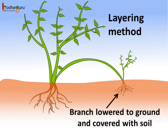In grape and jasmine plants, a young branch is lowered to the ground and then covered with a layer of soil. After some time, roots grow from it. When the branch is cut off from the parent plant, it becomes an independent plant. This artificial way of vegetative reproduction is called layering.